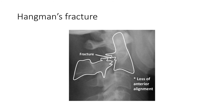Hangman's fractures are unstable injuries, but trauma to the spinal cord is rare. They are bilateral fractures through the pedicles of C2, generally seen after a hanging but also commonly resulting from motor vehicle collisions. The mechanism is hyperextension. Features on X-ray include pre-vertebral soft tissue swelling, avulsion of the anterior inferior corner of C2 associated with rupture of the anterior longitudinal ligament, anterior dislocation of the C2 vertebral body, and bilateral C2 pars interarticularis fractures.